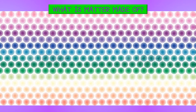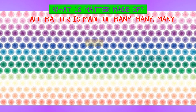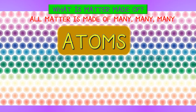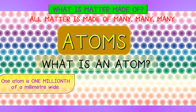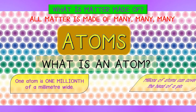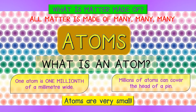What is matter made of? Matter is made of many, many atoms. What is an atom? An atom is one millionth of a millimeter wide. Millions of atoms can cover the head of a pin. Atoms are very small.